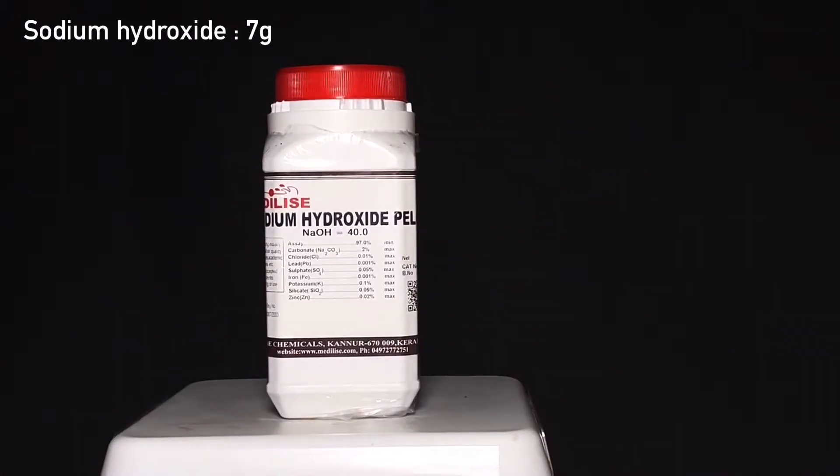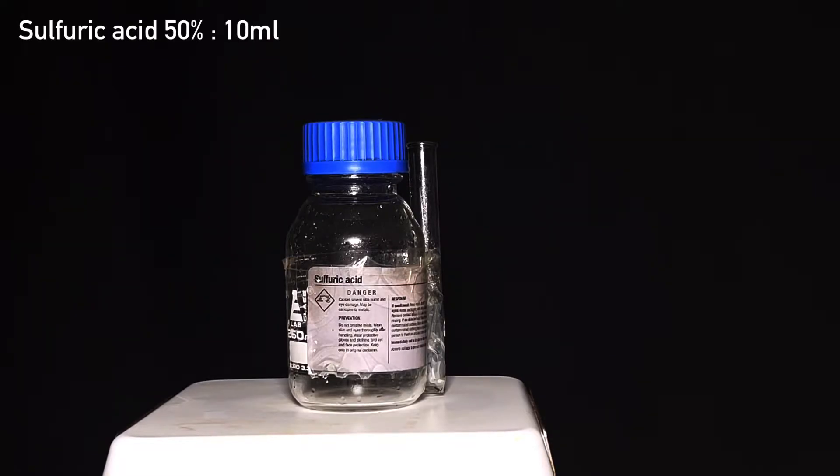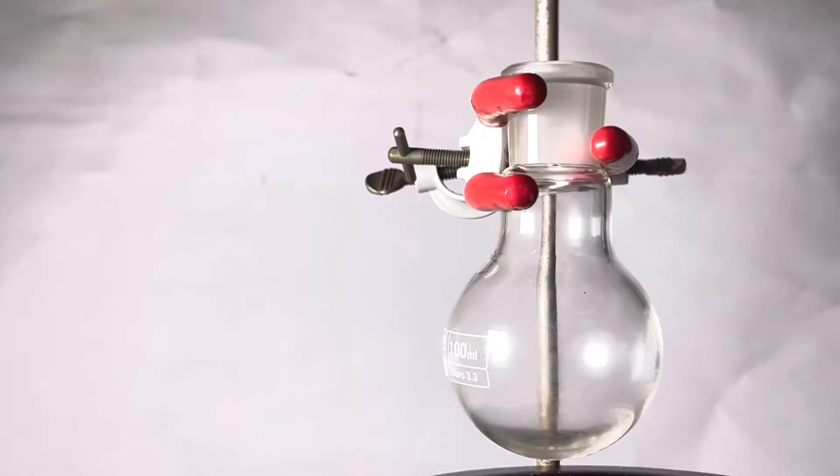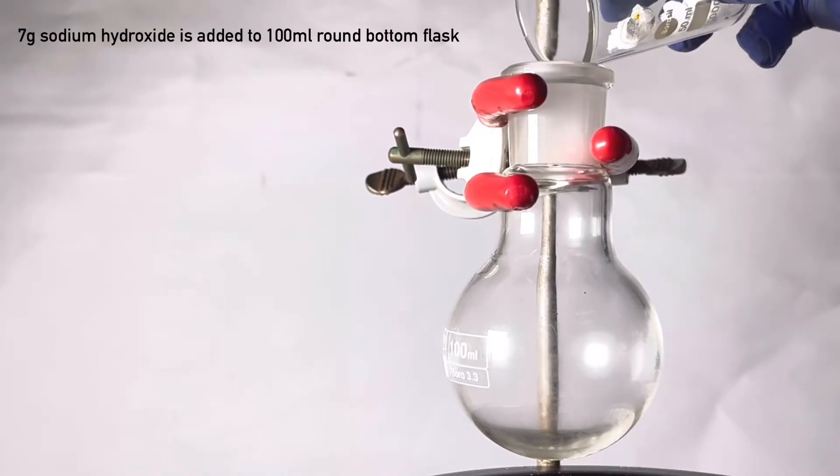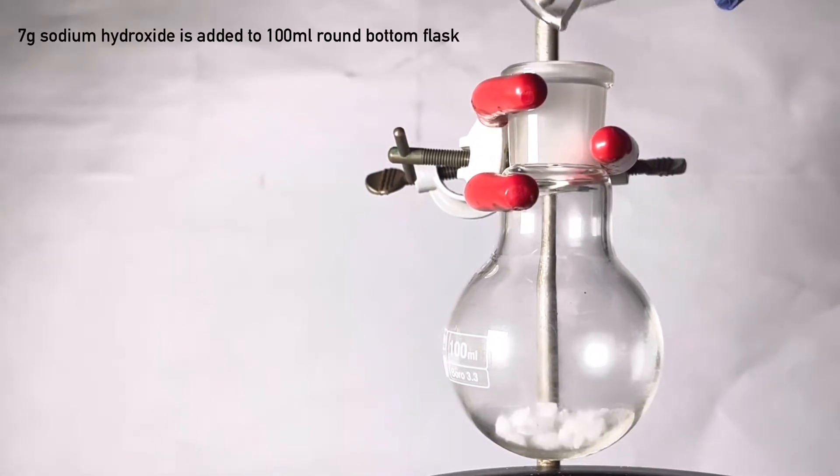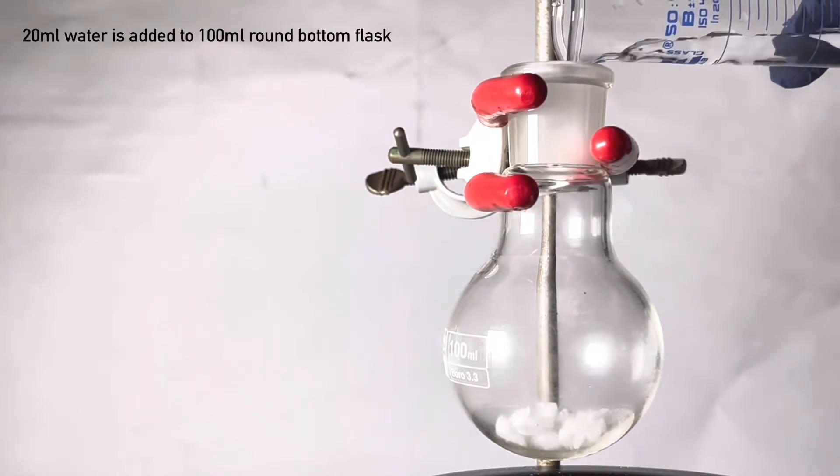7 grams of sodium hydroxide and 10 milliliters of 50% sulfuric acid. Start by taking a 100 milliliter round bottom flask and transfer 7 grams of sodium hydroxide to it. 20 milliliters of water was added to dissolve it.